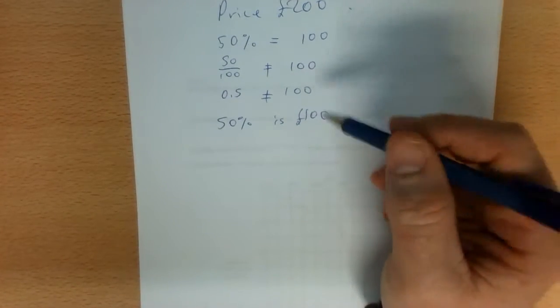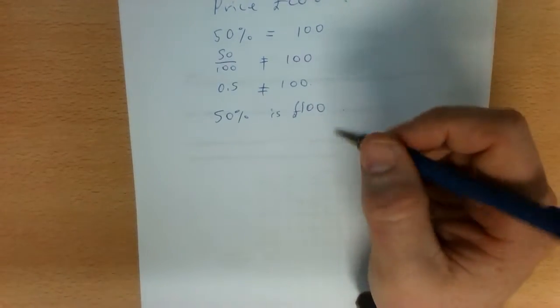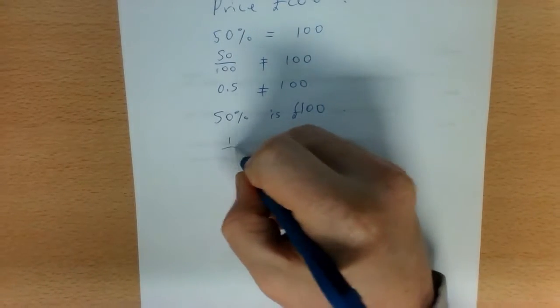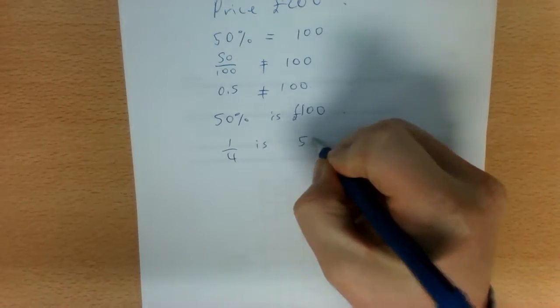The same thing, as I've said in the comment, applies not just to percentages but to fractions. So if I was talking about a quarter of that, I would say a quarter is 50 pounds.